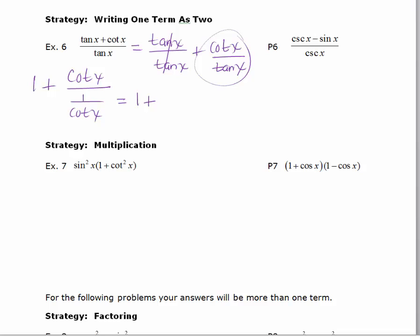That will give me 1 plus, so when I divide by a fraction that's the same thing as multiplying by the reciprocal. So 1 over cotan x would be cotan x over 1. I get 1 plus cotan squared x and this is a Pythagorean identity. 1 plus cotan squared x equals cosecant squared x and this is your answer.